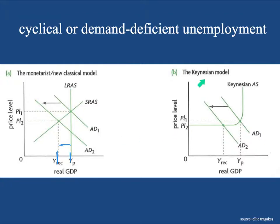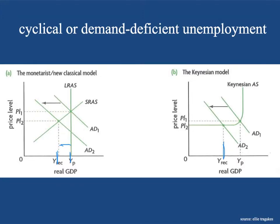The exact same thing you can do with the Keynesian model. Here's the Keynesian aggregate supply curve — of course there's only one. The story starts at AD1, and then there's a drop in aggregate demand for whatever reason. Demand drops, and this gap is a recessionary gap. You can use this model to express a drop in employment, demand-deficient unemployment, or cyclical unemployment. Either model works — the gap is a recessionary gap in both cases.